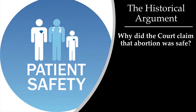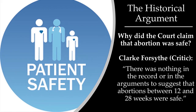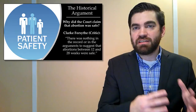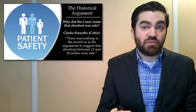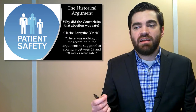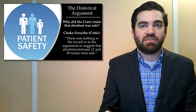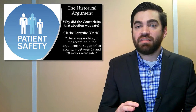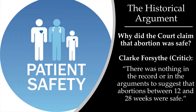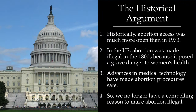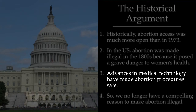There are also criticisms directed at the third statement in the historical argument — the claim that as of 1973, abortion procedures were perfectly safe. Clark Forsythe notes that there was nothing in the record or in the arguments to suggest that abortions between the 12th and 28th week of pregnancy were safe. In other words, the court didn't have any data on how safe abortion procedures during the second and third trimester were — and that makes sense, because the procedure wasn't legal in most places in the US, so it wasn't well-studied or well-documented.